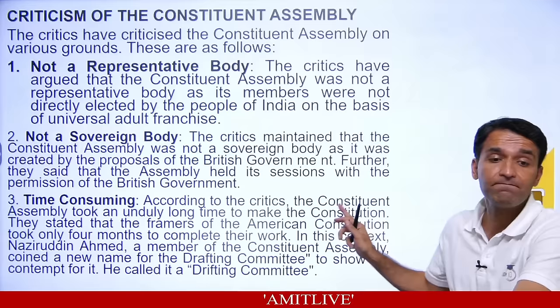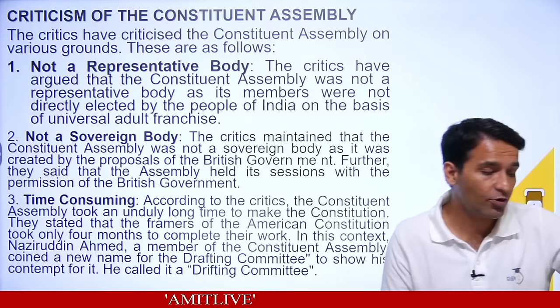So that is how we made our constitution. There is some criticism of the Constituent Assembly — it was not a fully representative body. The reason: those 296 people were not directly elected by universal adult franchise.